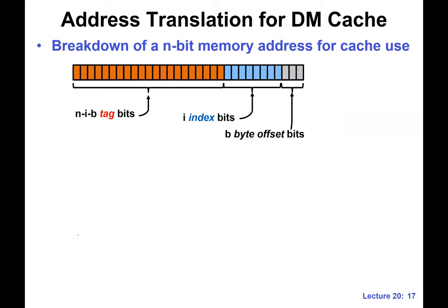Let's look at this slide. This is a very important slide to understand how exactly we do the addressing for cache. Given the full memory address — and this is not a memory block address anymore, this is a full memory address — for direct-mapped cache, we can break down this memory address into three parts. The first part, the gray part, is something called byte offsets.